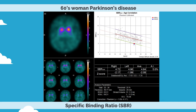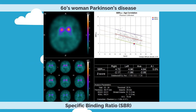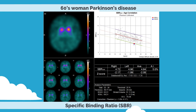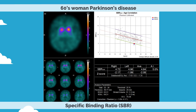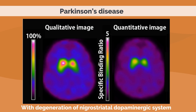For example, in a woman in her 60s with Parkinson's disease, the specific binding ratio was found to be about two standard deviations lower than those of healthy subjects. When diagnosing various movement disorder diseases with DAT scan, it is important to evaluate both qualitative and quantitative images.